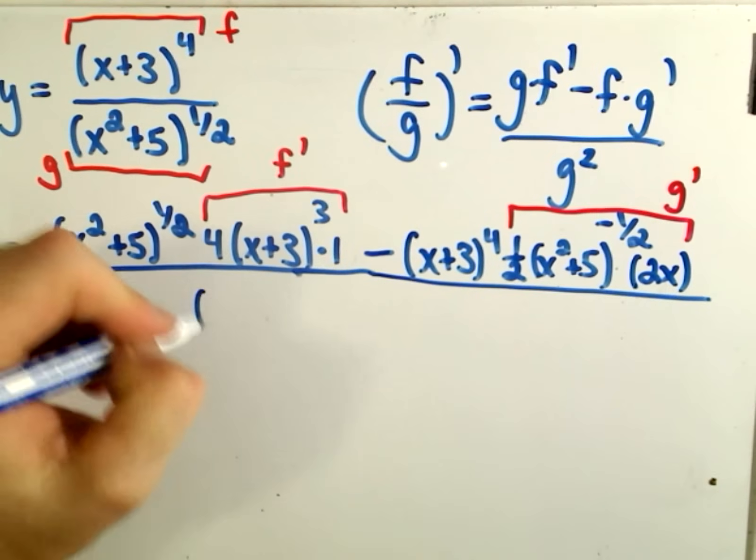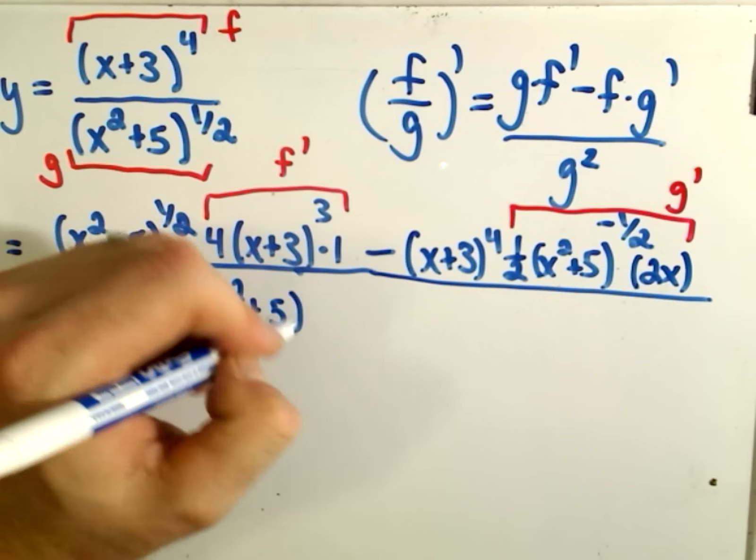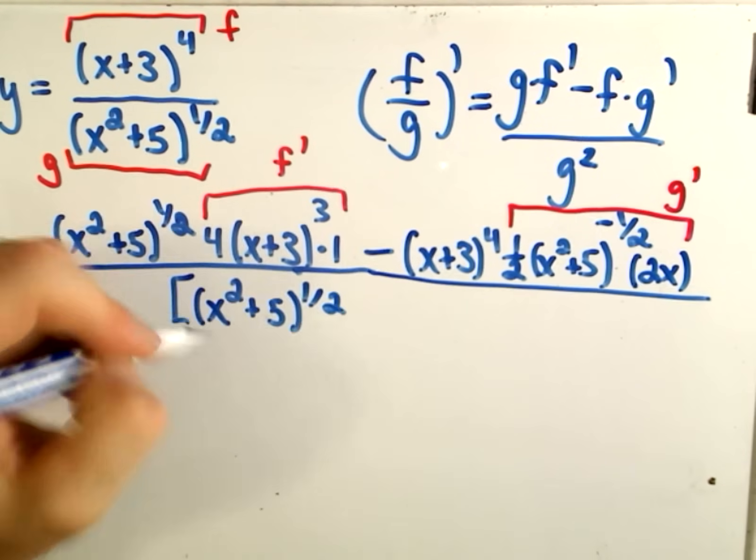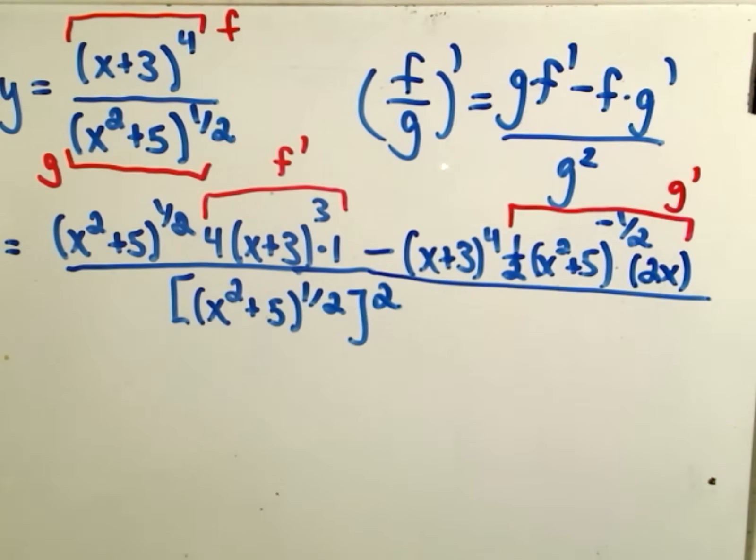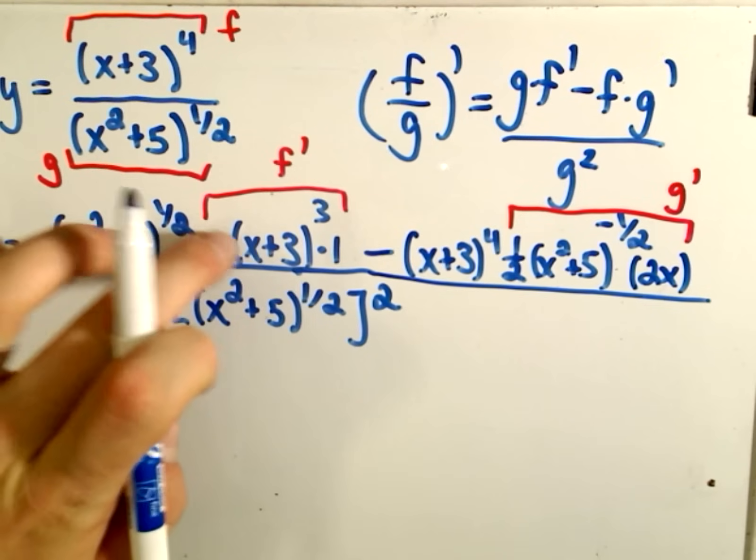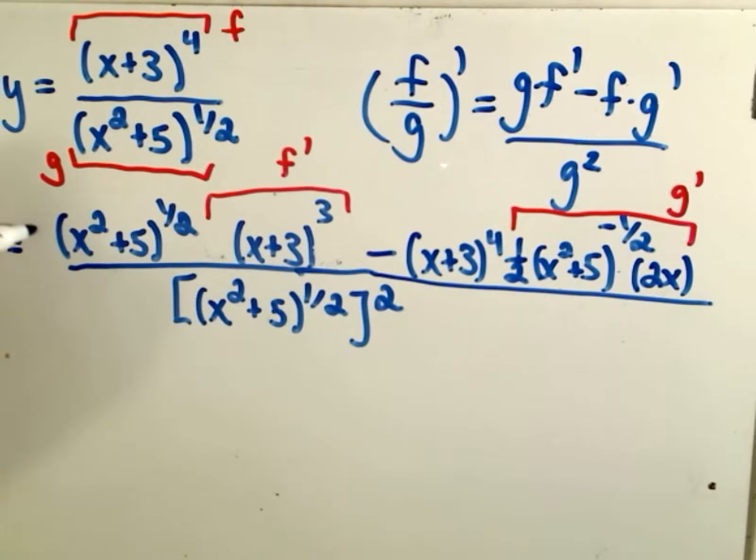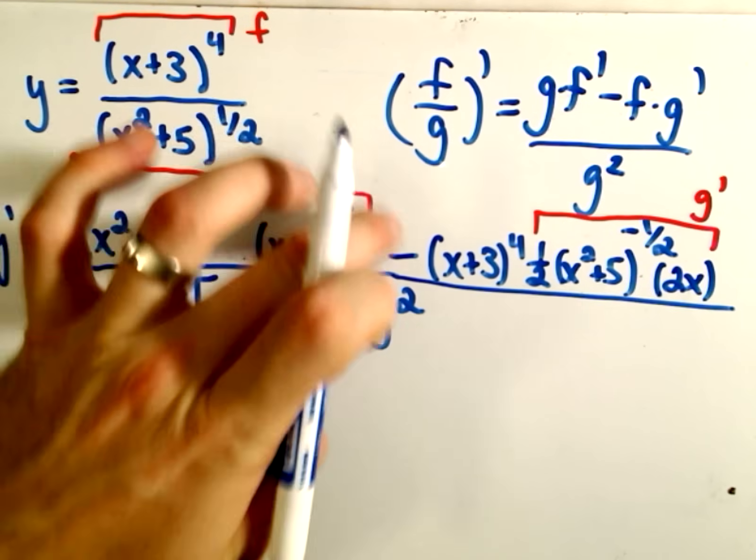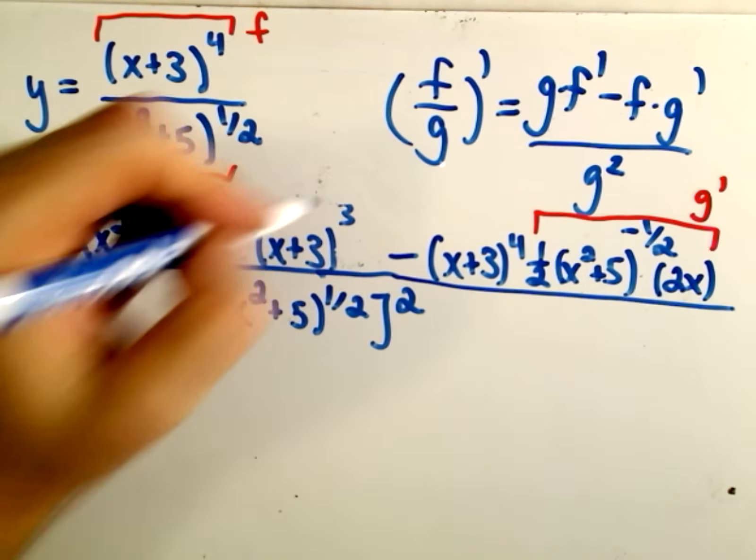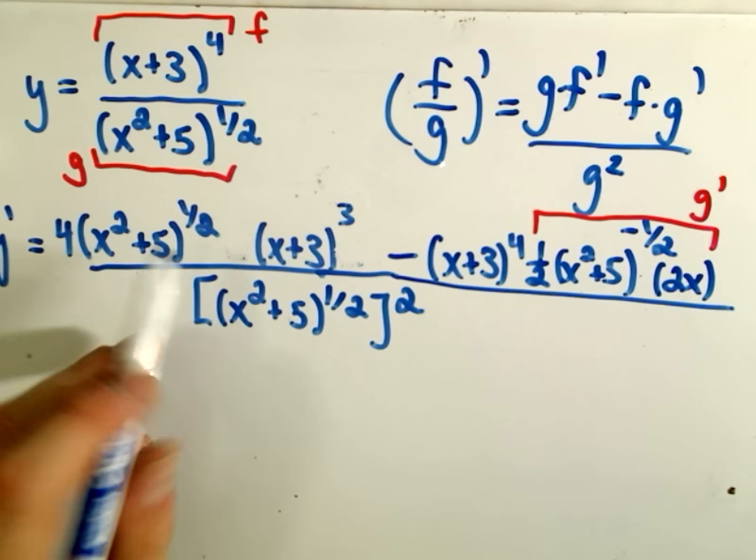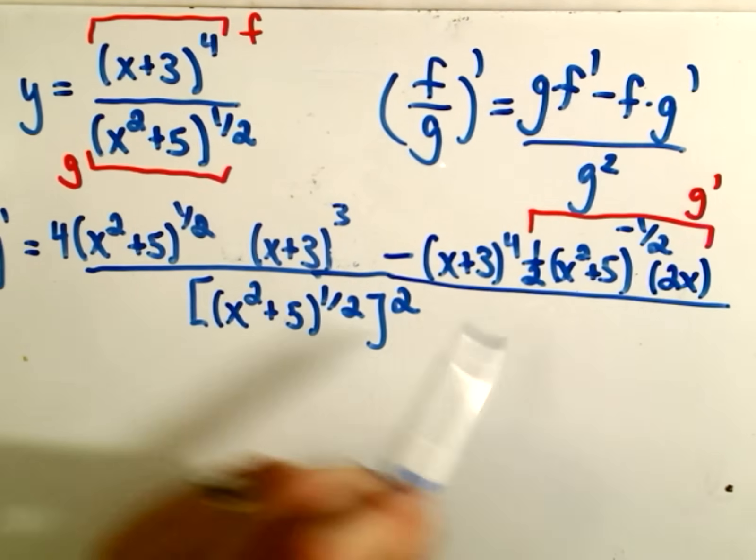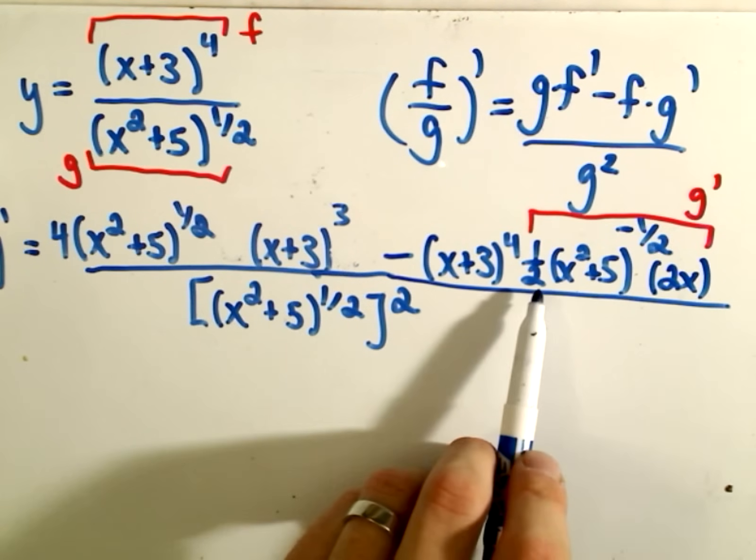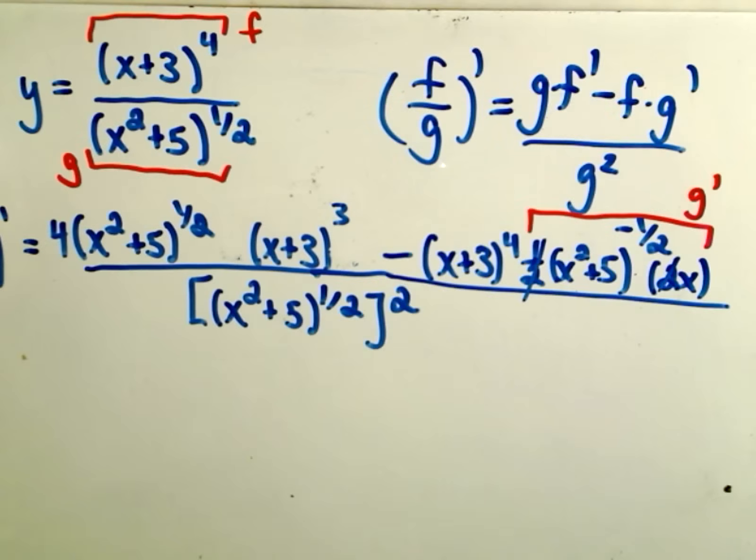And then it says you take the bottom thing, okay, you're squaring a square root, so it's going to get rid of it. So again, we're just squaring the denominator. And now usually I'll try to do any simplifications that I can at this point. So the 4 times the 1, I would pull the 4 out front. Okay, and then, so then I would have simply 4 times x squared plus 5 to the 1 half times x plus 3 cubed.